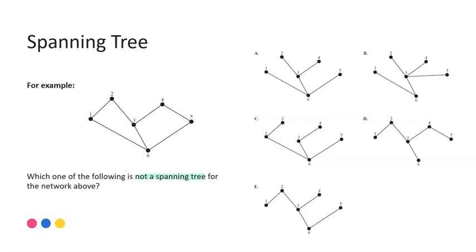So with A, we had a connection from one to six, yes, five to six, yes, six to three, yes, three to four, yes, and three to two. So we can say that A is a spanning tree.